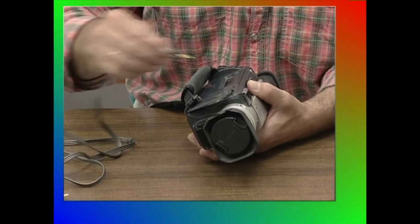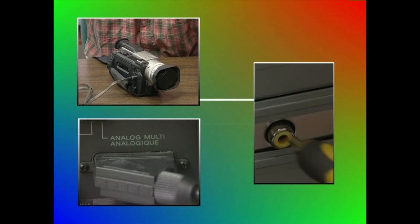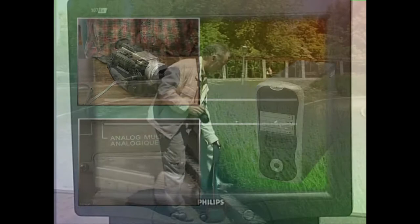Video kamera analogikoa edo digitala eta etxeko video irakurgailua ere erabil daitezke irudiak lortzeko. Izan ere, irudi analogikoak ordenagailura deskarga daitezke videoa atzemateko txartel baten bitartez. Horrela, irudi analogikoak irudi digital bihurtuko ditugu.